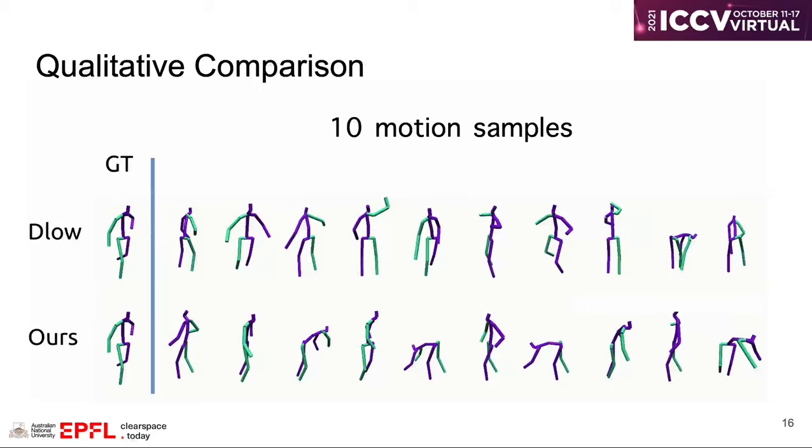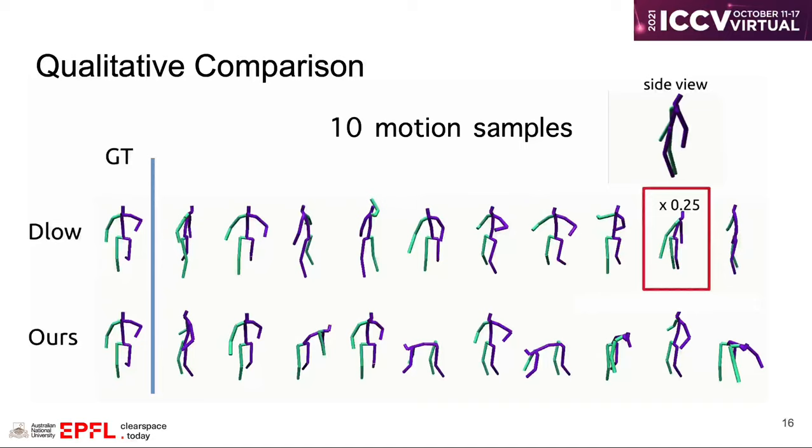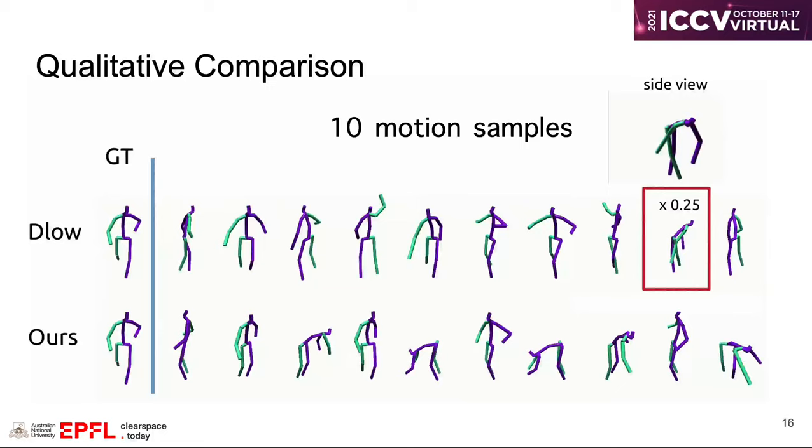we show the ground truth motion, and the rest columns we show 10 different samples from the generator. The history motion is in blue and red skeletons, and future motion is shown in green and purple skeletons.